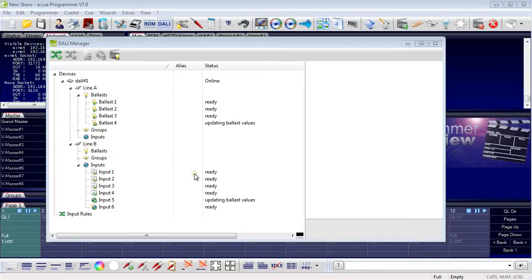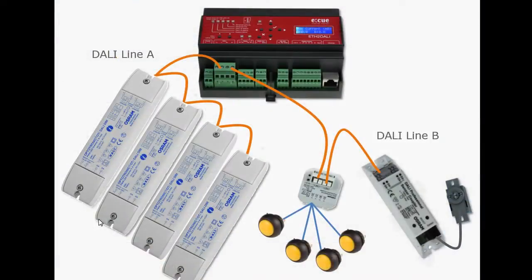Let's have a look at the current configuration. Today's configuration is a little bit more complex than the last one. We have four ballasts for constant voltage LEDs. We have one key coupler with four connected buttons and we have a sensor coupler with a multi-sensor. The sensor is a motion detector and a light sensor in one housing. In fact, there are two devices here and we will see this later in the DALI manager.